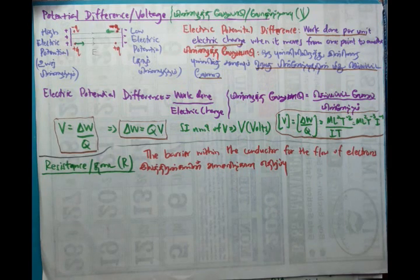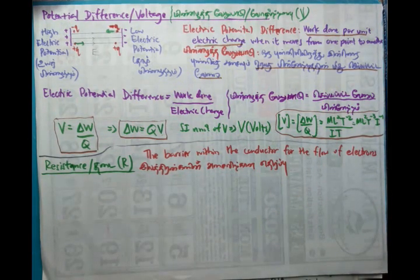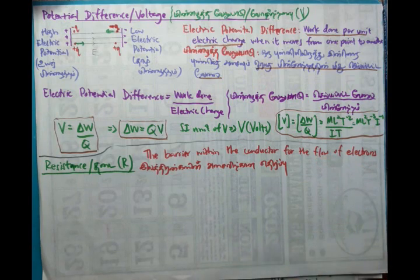If a material has high resistance, electrons can't travel conveniently. So insulators have high resistance. But in conductors, electrons can travel conveniently. So they have low resistance.